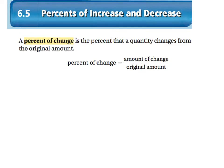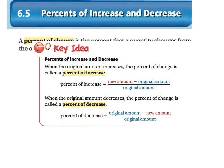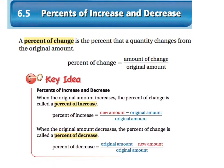Which leads us into our key idea. The key idea talks about a percent of increase or decrease. Percent of increase is when the original amount increases. So you take the new amount minus the original amount divided by the original amount. To find the decrease, you take the original amount minus the new amount divided by the original amount.